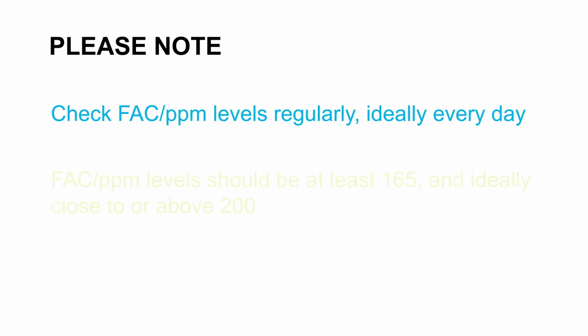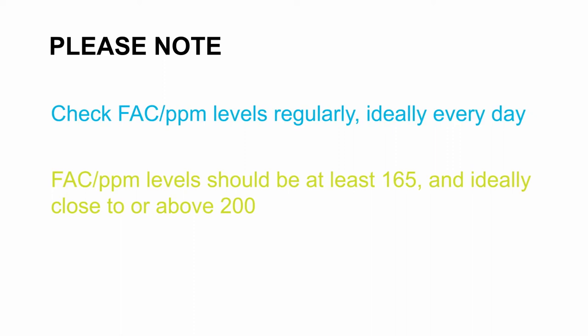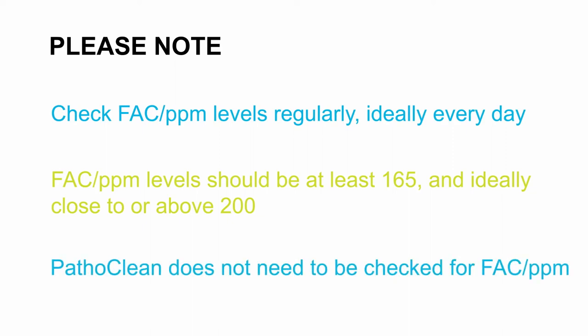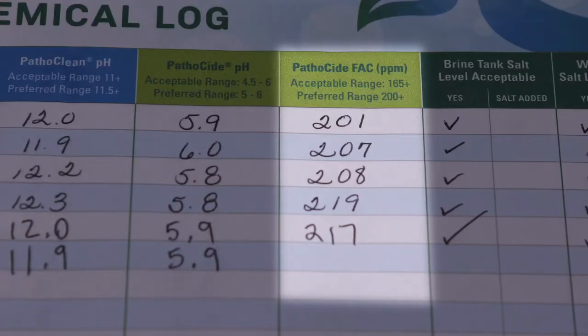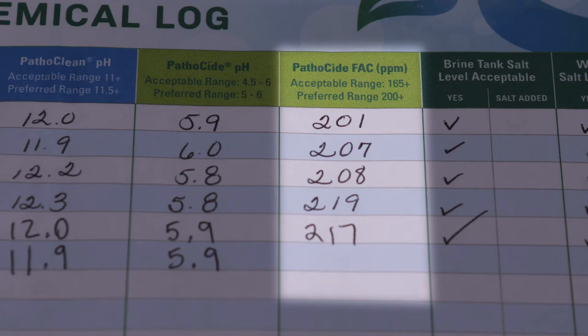The acceptable range is above 165 PPM, and preferably close to 200 PPM, for solutions to be optimally effective. Pathoclean does not need to be checked for FAC. It's important to record the FAC levels on your daily log sheet, which can be used to discover unfavorable trends and help you determine when a service technician's help may be necessary.